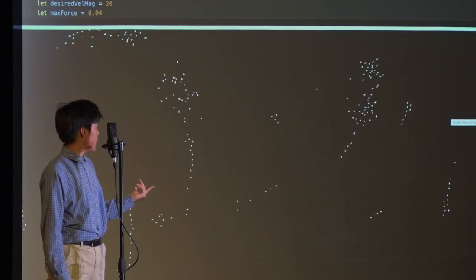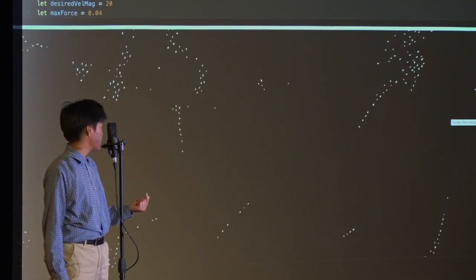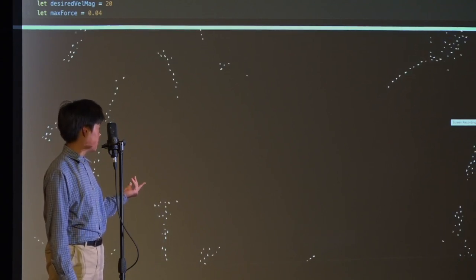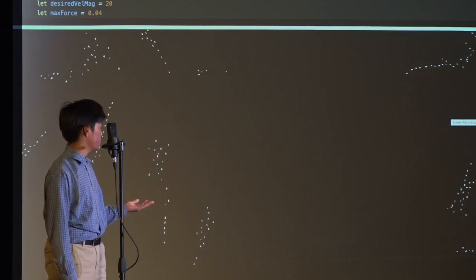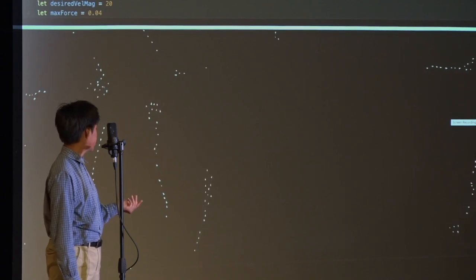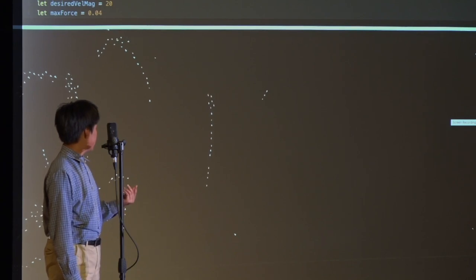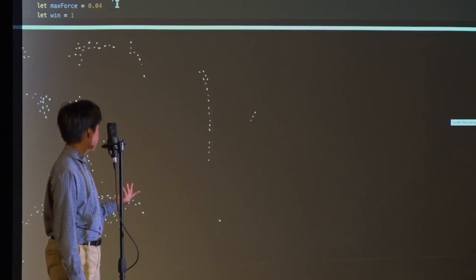You can see this is just the three very simple rules, by the way: cohesion, alignment, separation. But you can see how they already create these swarm dynamics. There's no other rules in the mix. It's just these three extremely simple guidelines for every single one of these boids, but you can see how it's already creating swarms.